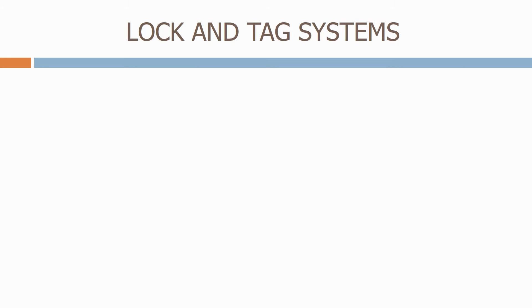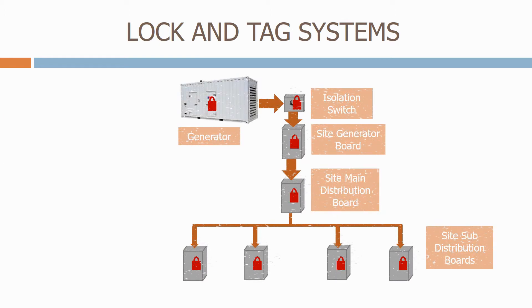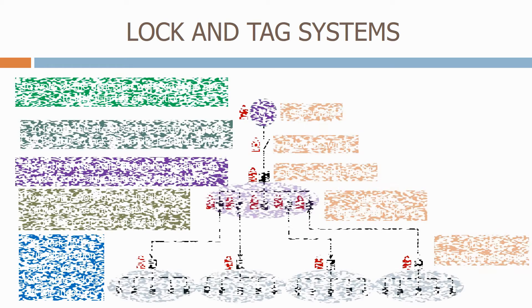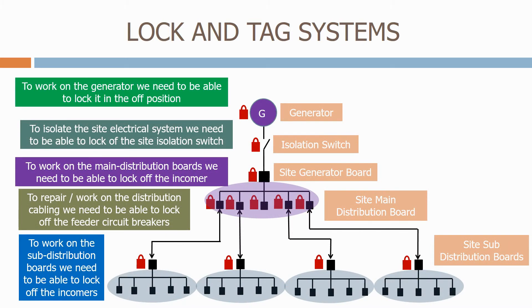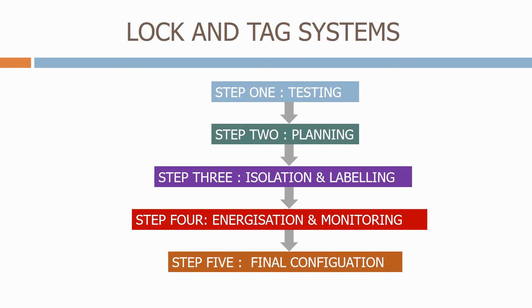In the final section, we look at lock and tag systems. These are critical to the safe operation of the electrical system on site. We start by looking at the lock and tag system itself, including the tag and the padlock. We then go on to see how we use the lock and tag system to lock off enclosures. Next, we look at isolation points and how we need them in the electrical distribution system to keep the system safe. And finally, we see how we use lock and tag systems to energize a system for the first time.